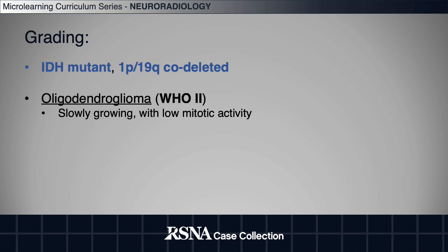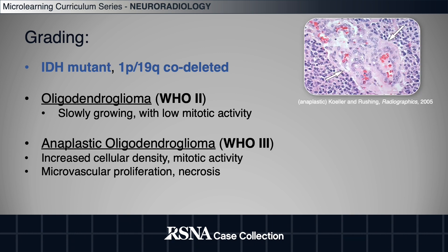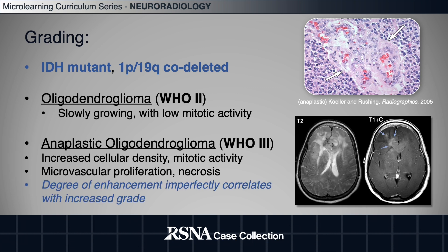A low-grade or WHO grade 2 oligodendroglioma is slowly growing with low mitotic activity on pathology, whereas a grade 3 tumor, also referred to as an anaplastic oligodendroglioma, demonstrates increased cell density, mitotic figures, microvascular proliferation, and necrosis. The degree of enhancement seen in these tumors imperfectly correlates with an increased grade.